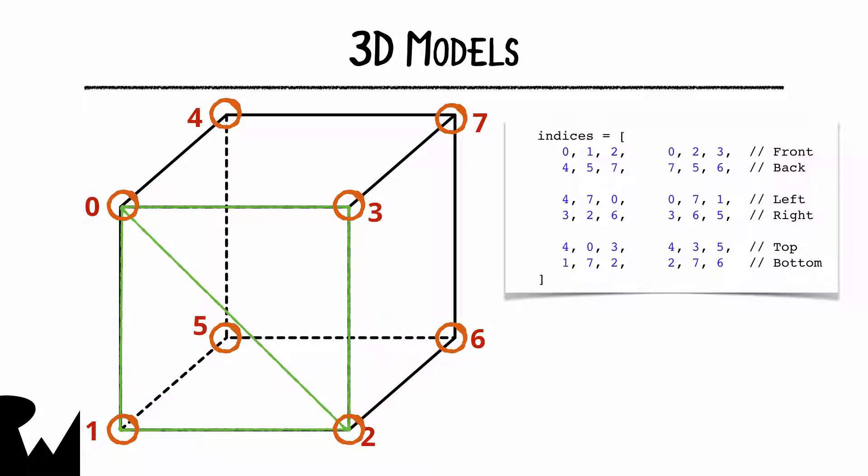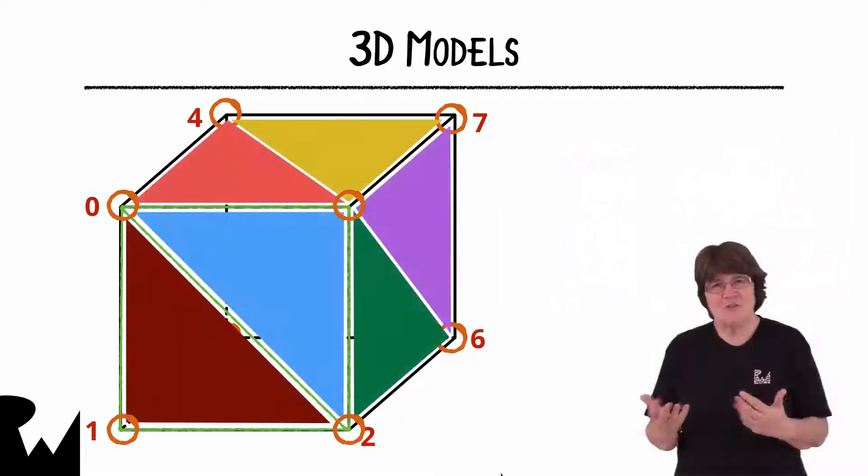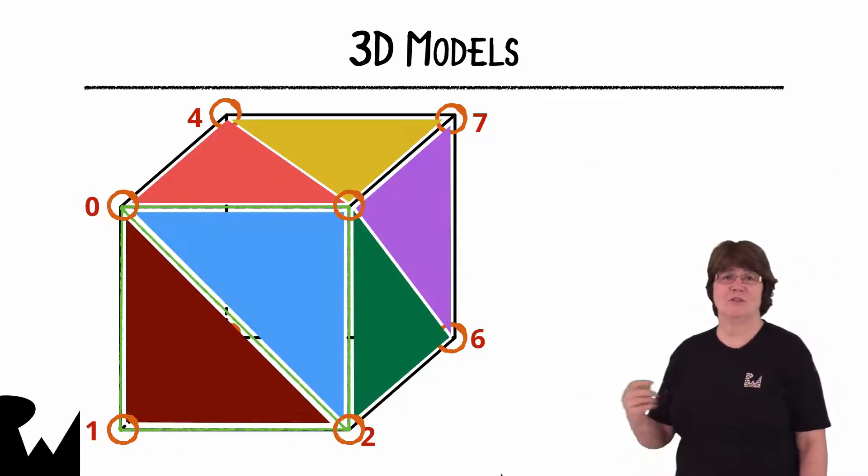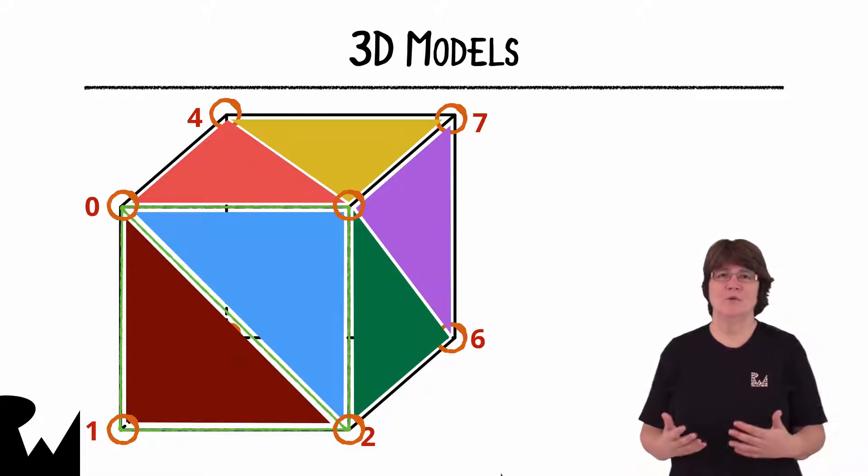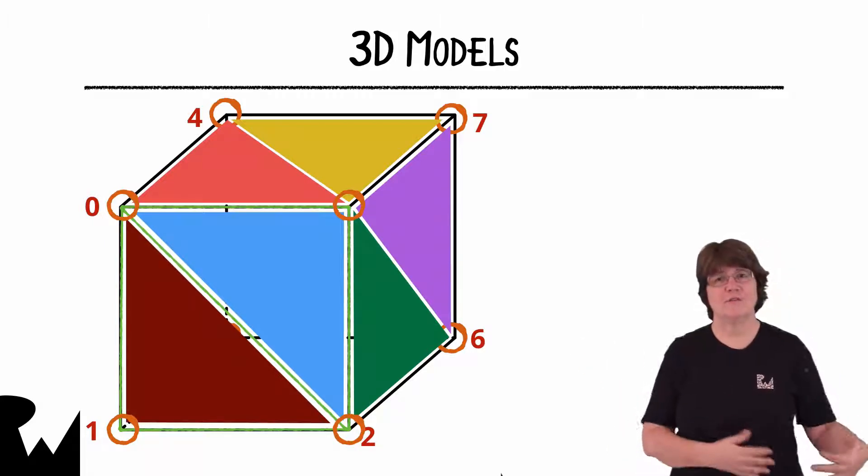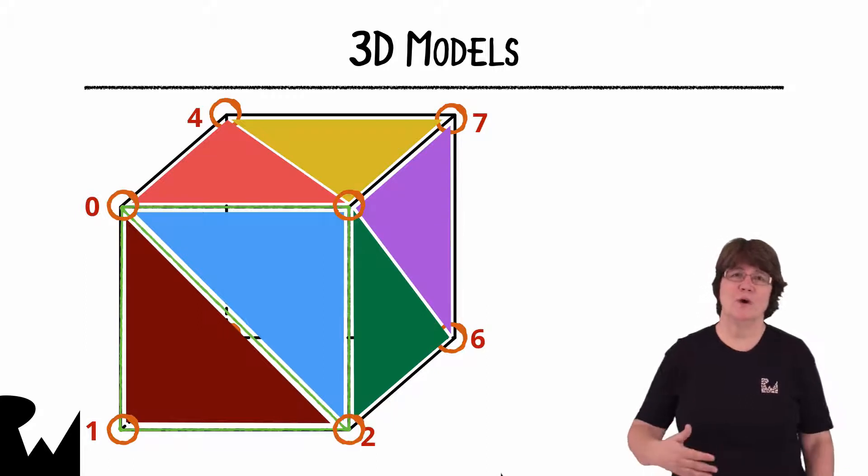Unless we tell the GPU otherwise it will render all 12 triangles. Obviously this isn't very efficient because at this angle we can only see six of them. We don't want to render all the faces that are facing away from us, just the ones that are facing towards us.